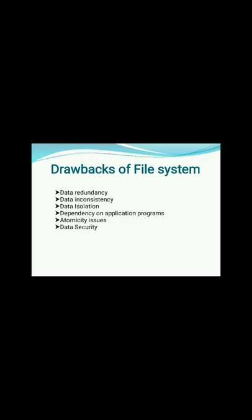Drawback of the File System. First, we will discuss what a file processing system is and how database management systems are better than file processing systems. First drawback is Data Redundancy. Data redundancy refers to the duplication of data. For example, if we are managing the data of a college where a student is enrolled for two courses, the same student details would be stored twice, which will take more storage than needed. Data redundancy often leads to higher storage costs and poor access time.